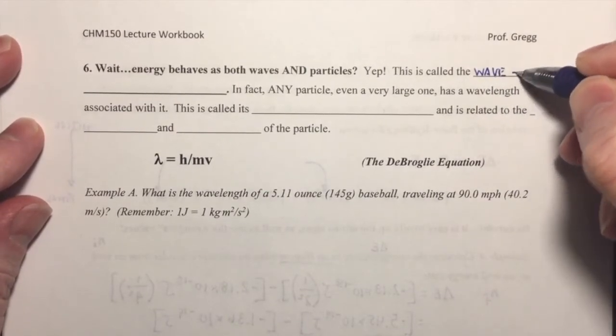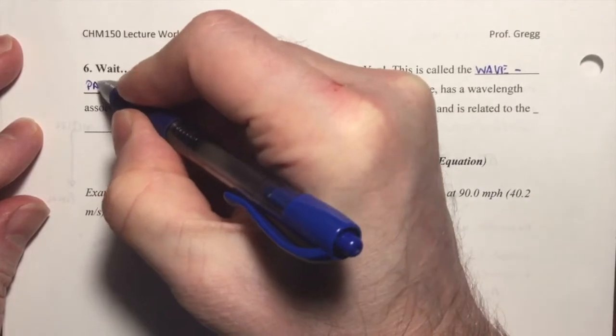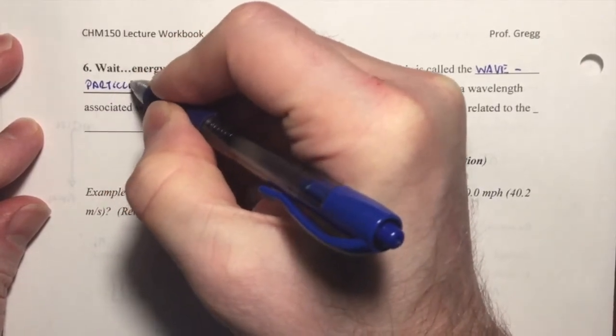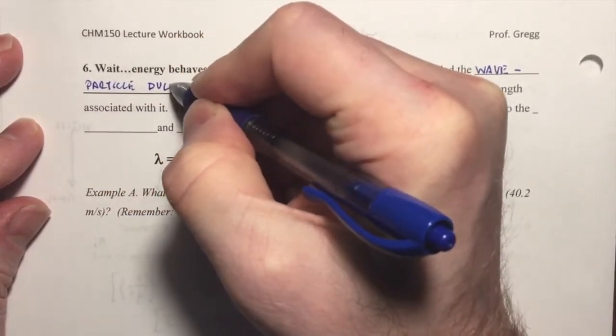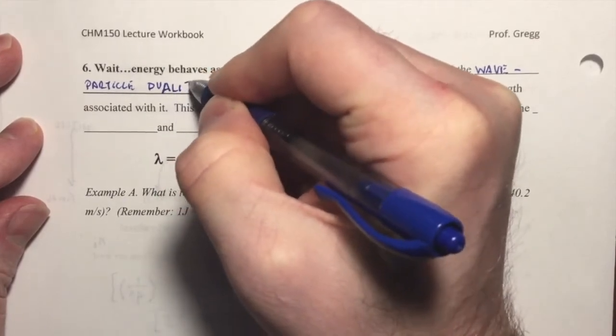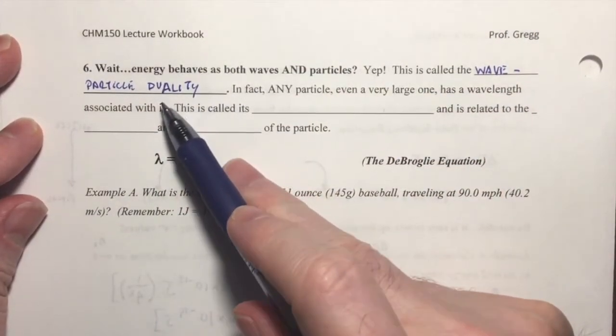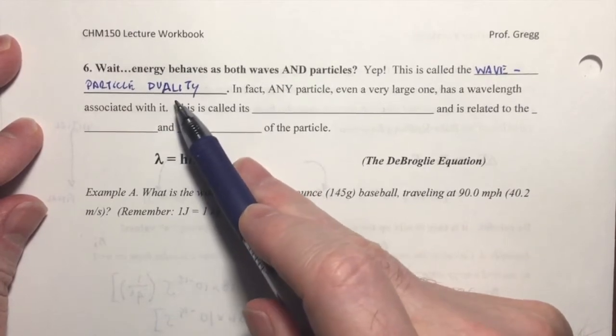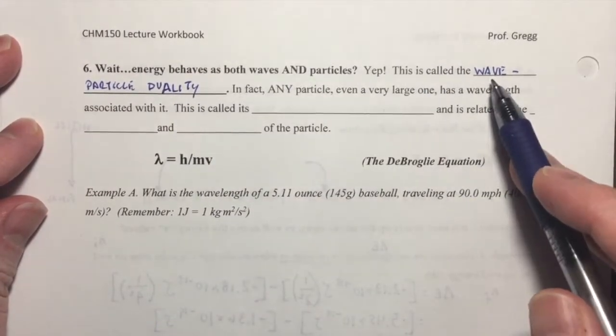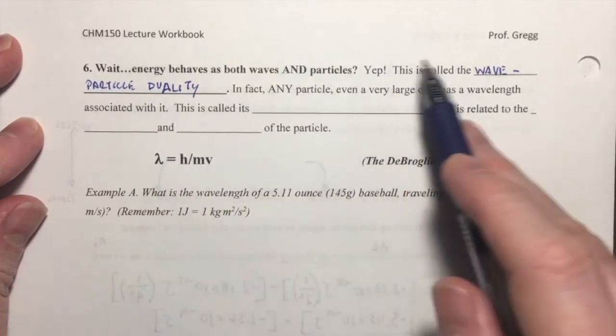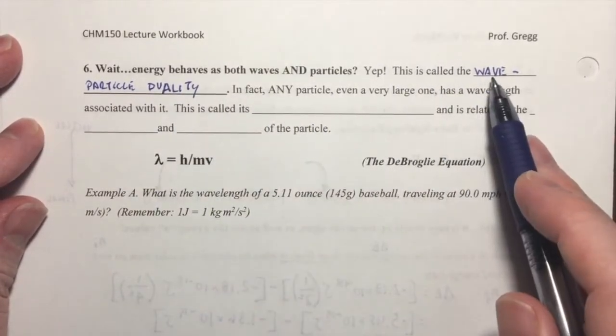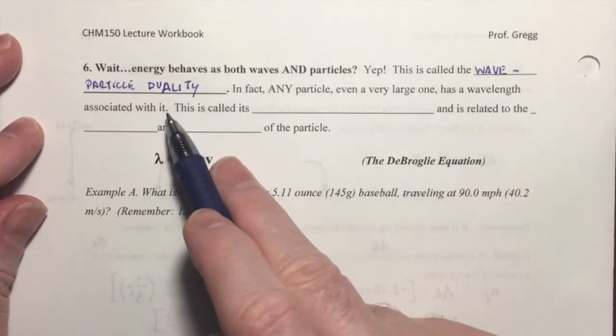Wave particle duality. And the word duality just means that there are two aspects to its nature. It behaves as a wave. It behaves as a particle. So its nature, its characteristics are like waves and particles. So it's a wave particle duality.